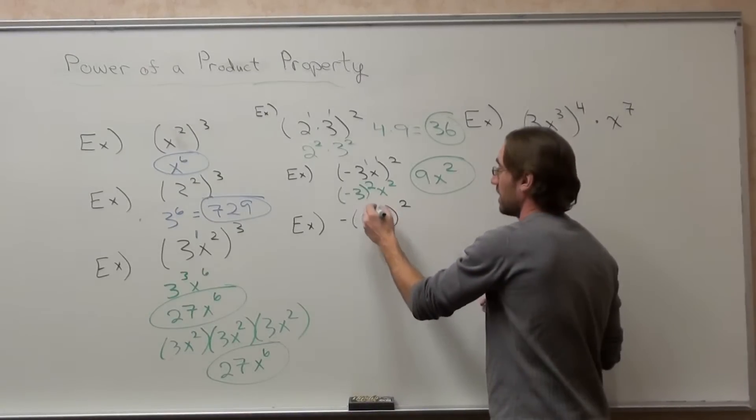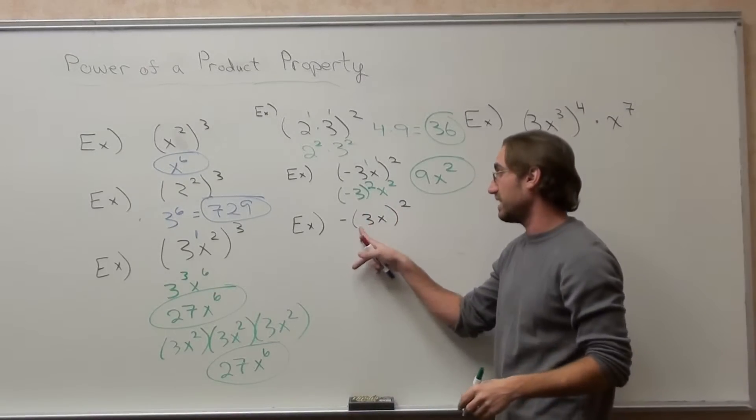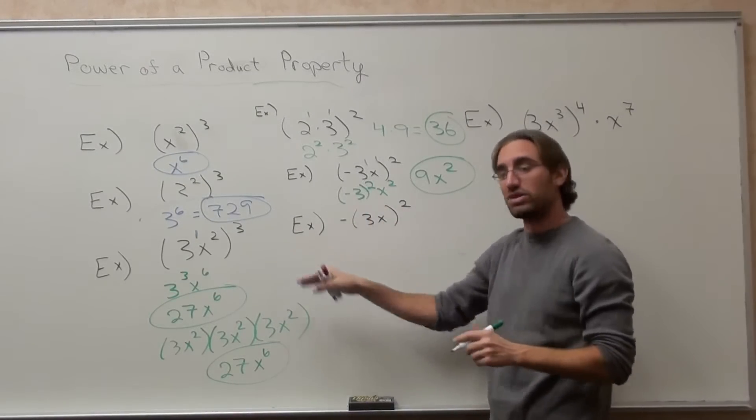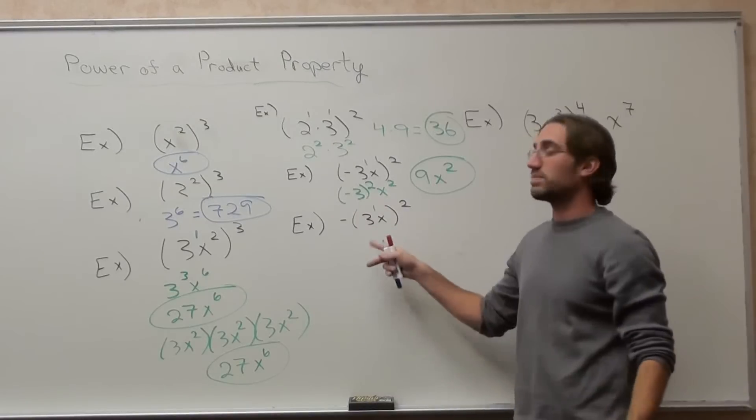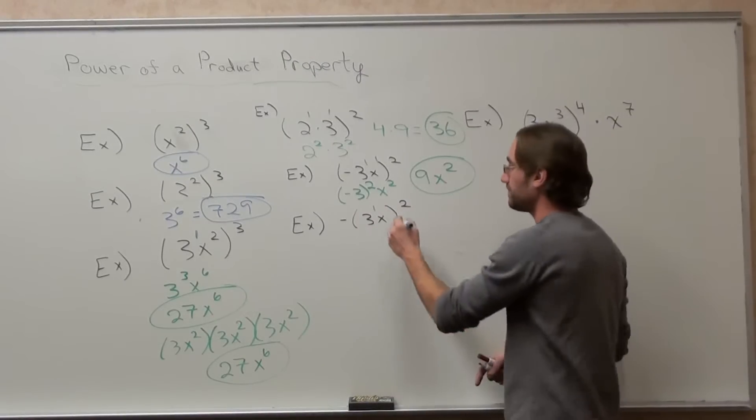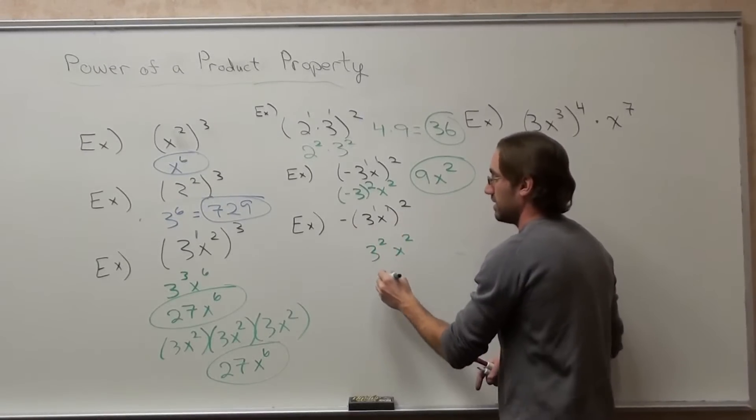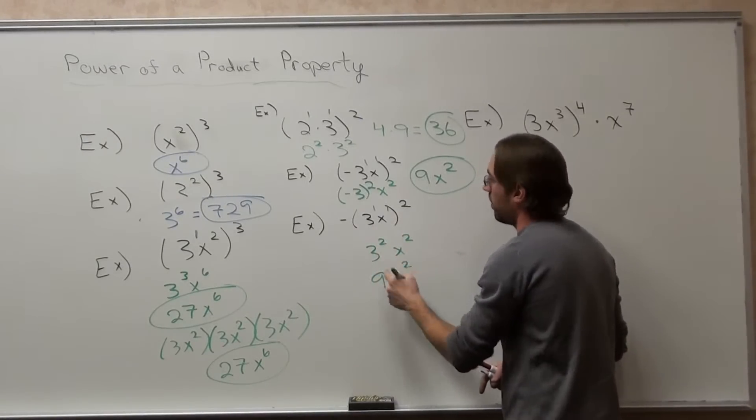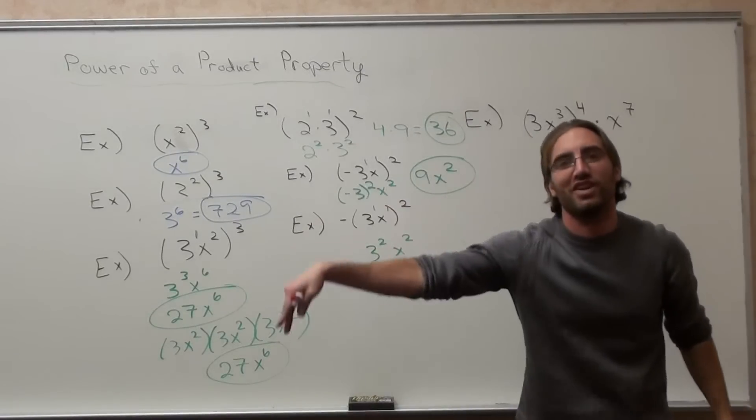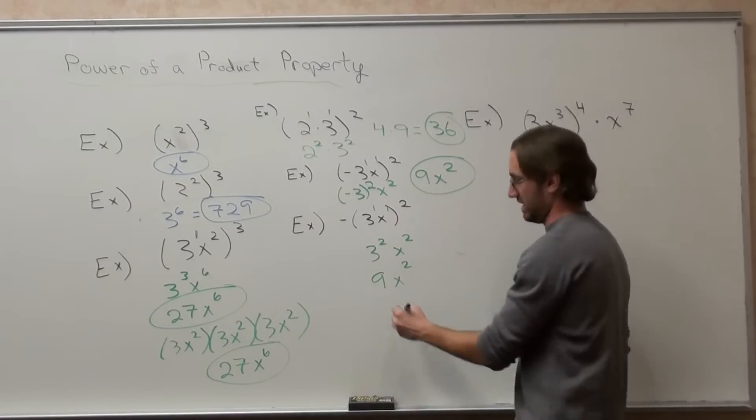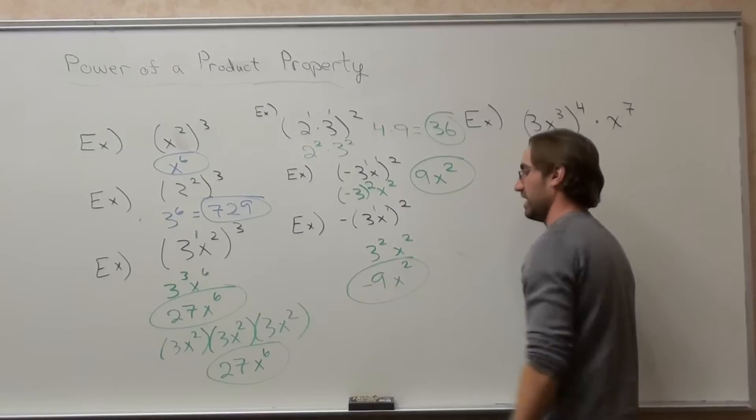This one's different though. The exponent on top of this 3, it's not a negative 3, it's just a 3 because the negative is outside, is a 1. The exponent on top of the x is a 1. That's 3 to the second, x to the second, that's 9x squared. But wait, there was a negative in front of the parenthesis that I've got to take care of on the last step. Negative 9x squared.